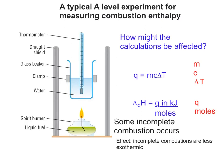So if some incomplete combustion occurs, incomplete combustions are less exothermic than their complete counterparts. The temperature change will therefore be lower, and the heat change Q will be lower.